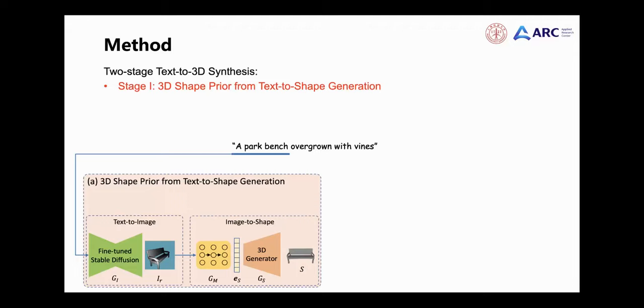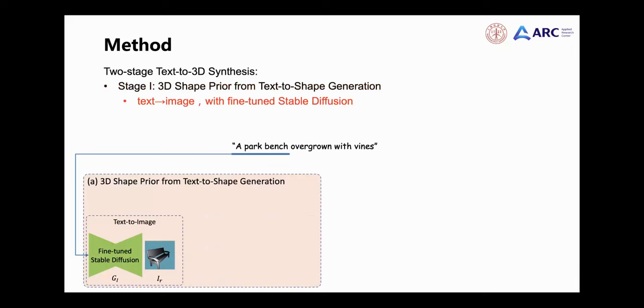Our algorithm contains two stages. In the first stage, we generate a high-quality 3D shape from the input text as prior knowledge. However, generating 3D shapes directly from text is very challenging, because it is difficult to collect paired text-to-shape data.